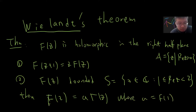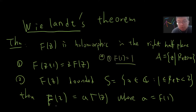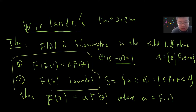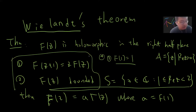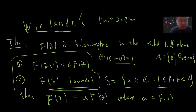Then f(z) = a·Γ(z) where a = f(1). If you add the condition f(1) = 1, then f(z) must be the gamma function. Only these two properties are non-trivial. This is the complex version of the Bohr-Mollerup theorem. Let's go to the proof. In order to prove it, let me use a lemma.